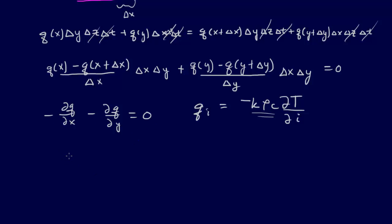So what we'll end up with is the second partial of T, the temperature with respect to x, plus the second partial of T with respect to y, equal to zero. And that is the Laplace equation.